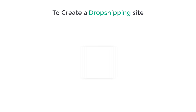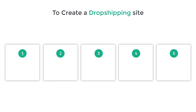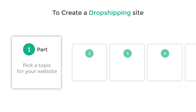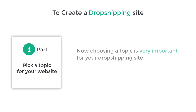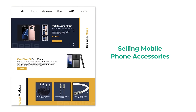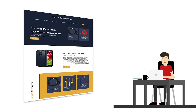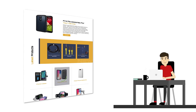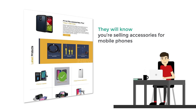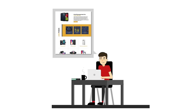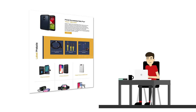To create a dropshipping site, we are going to do five parts. The first part is to pick a topic for your website. Choosing a topic is very important as it helps your site to stand out. Let's say you're selling mobile phone accessories — when someone views your product, they will know you're selling accessories for mobile phones and gadgets. This will help your customers remember your site easily and encourage them to return and recommend it to others.